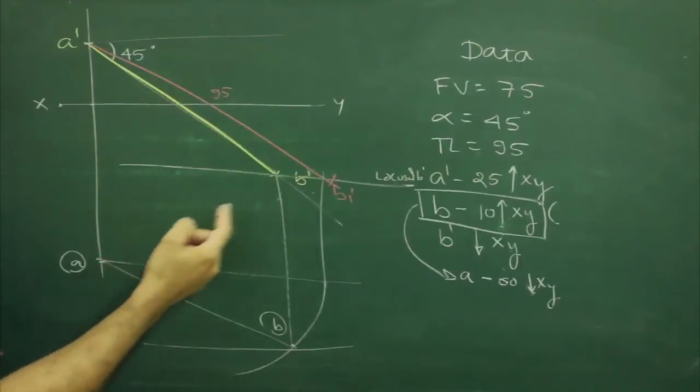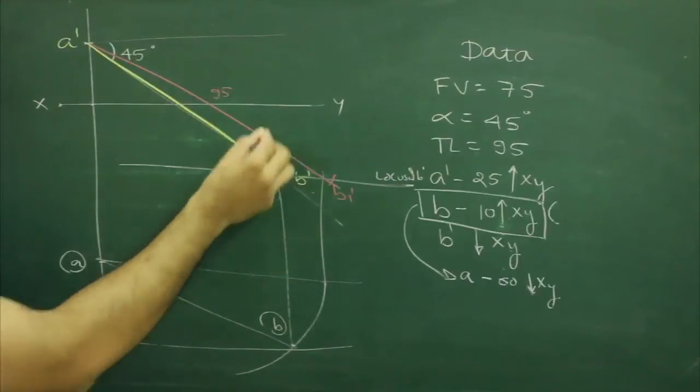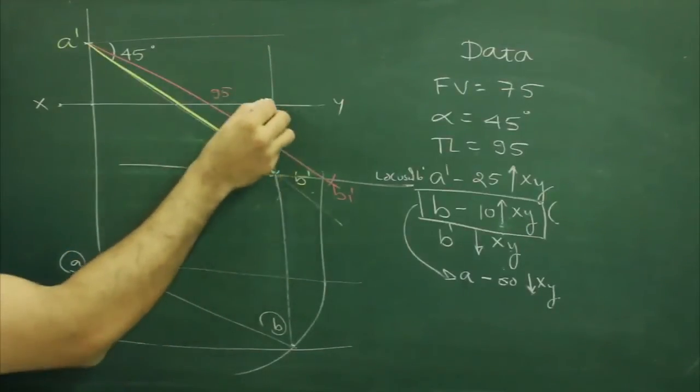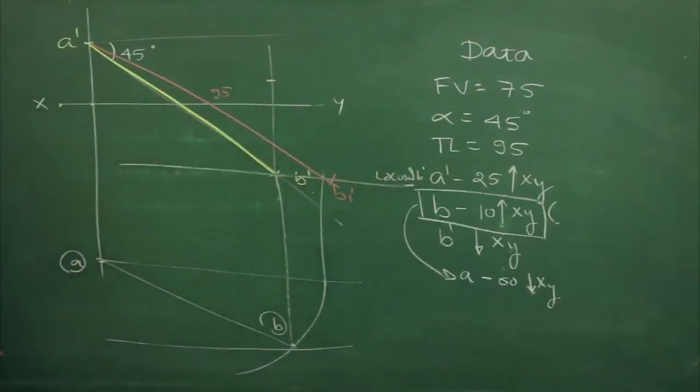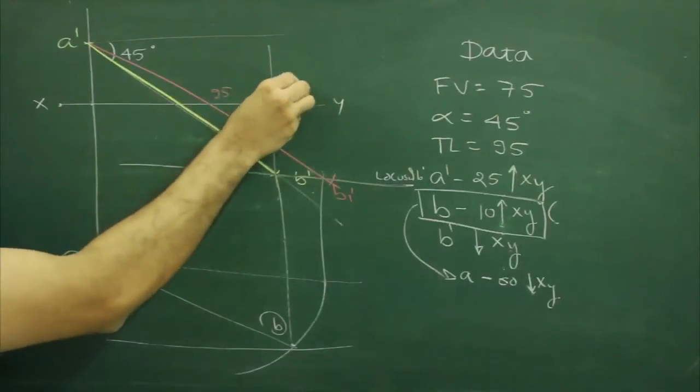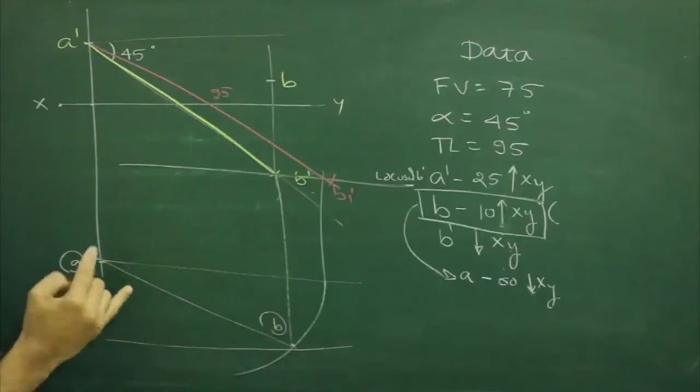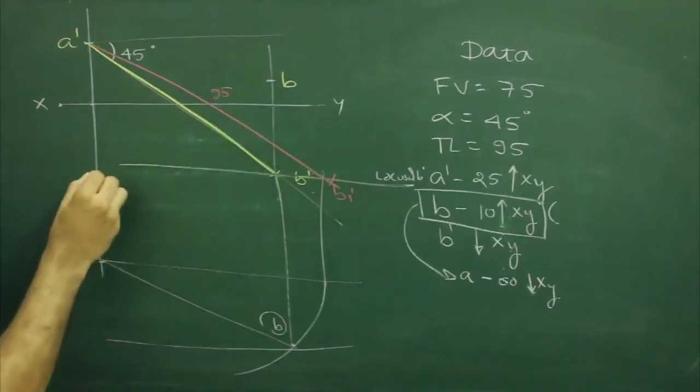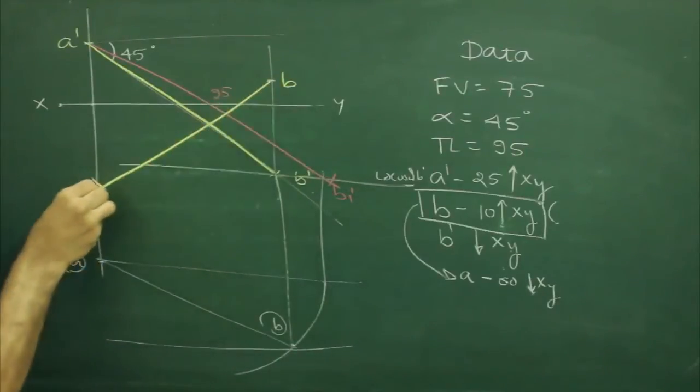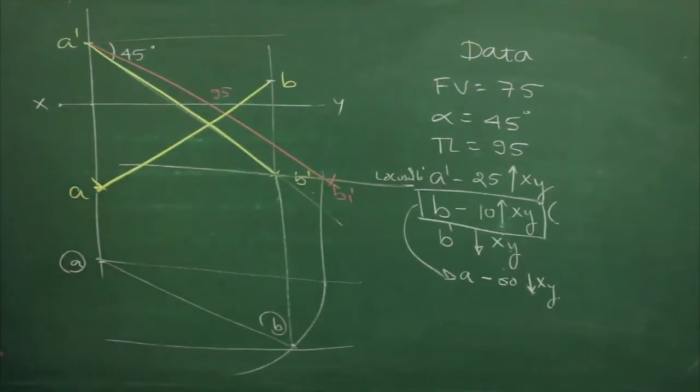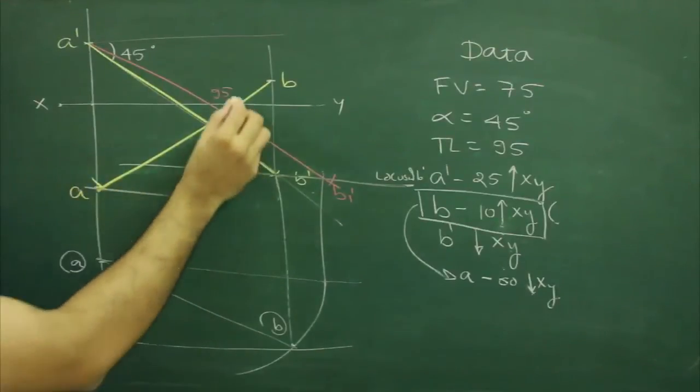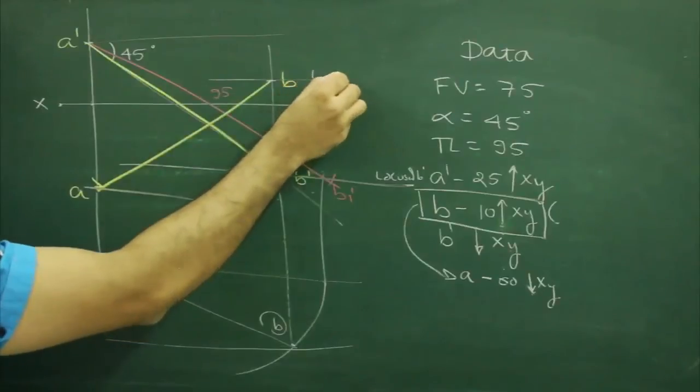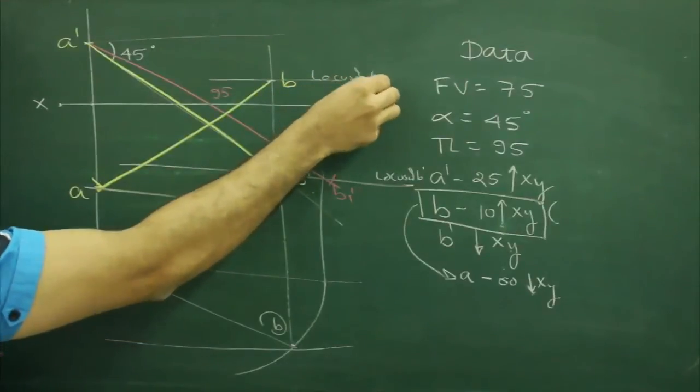Now if you take original data where B is 10M above XY, so I will extend this line, I will go up by 10. If I mark this point as B, then I will take B to A in my compass, and from here I will cut off this side, so I will get A. I can draw horizontal line from here, this is locus of B.